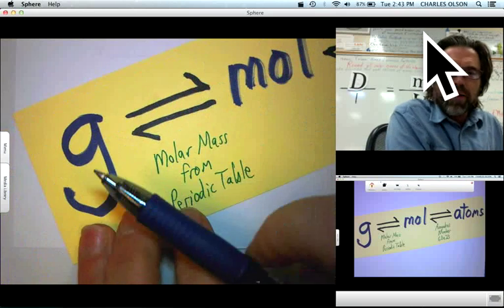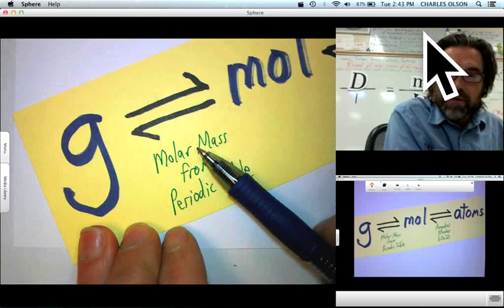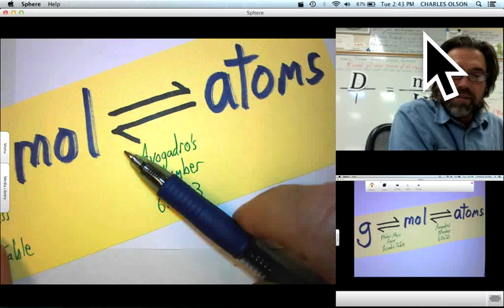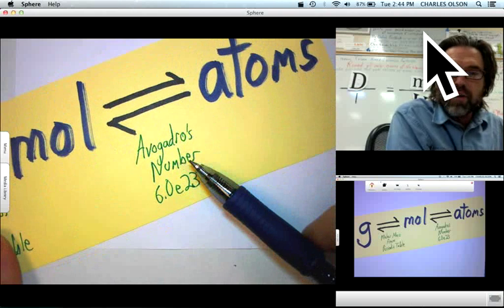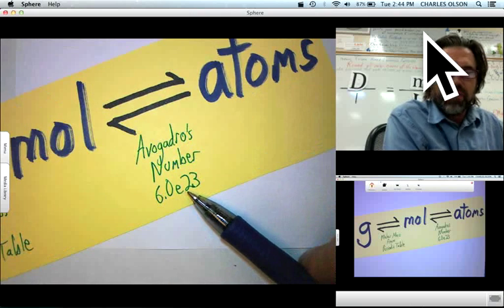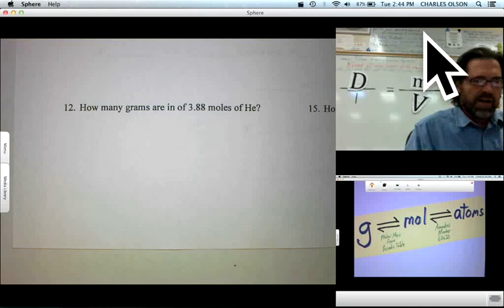Remember, when converting grams to moles, we use the molar mass in grams per mole from the periodic table. And moles to atoms, it doesn't even depend what element that is. That's based on Avogadro's number, 6.0 times 10 to the 23rd. Let's do some sample problems from our moles in an element worksheet.